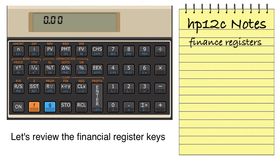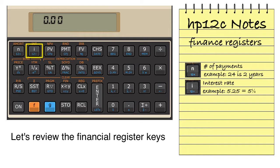N will store the number of payment periods, usually months. For example, storing 24 would mean a two-year loan. I is interest rate — for example, 5.25 is 5.25%. You do not enter interest rates as a decimal; it's understood that this number is a percentage.